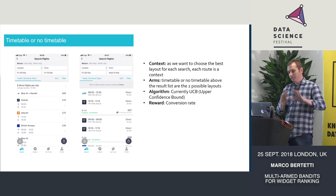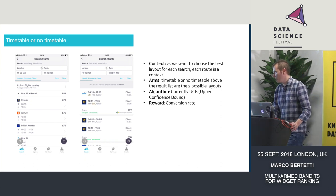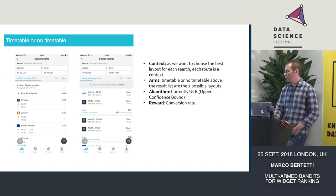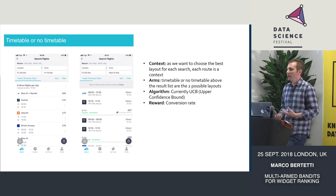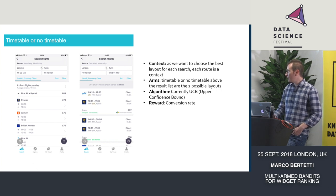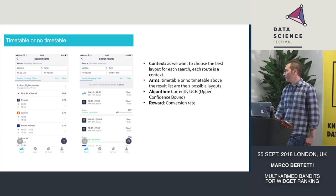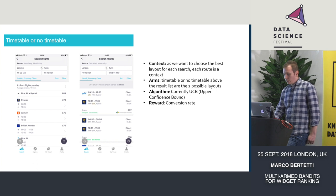We decided to start small and began with the timetable widget. On the right is the classic search results, and on the left is the timetable widget, which aggregates results by airline into a more compact view. In this experiment, the context is the route, the arms are timetable or no timetable — just two options. The algorithm is UCB, and the reward is the conversion rate adjusted using UCB.